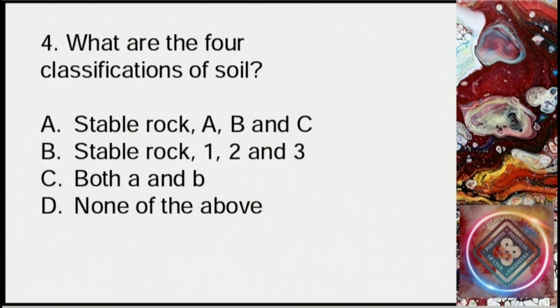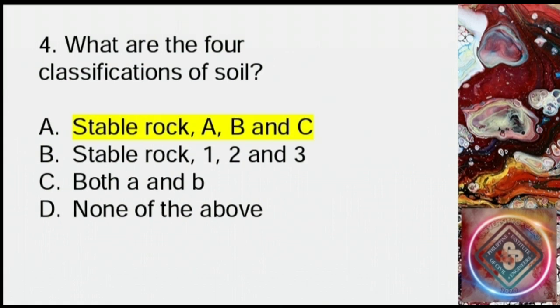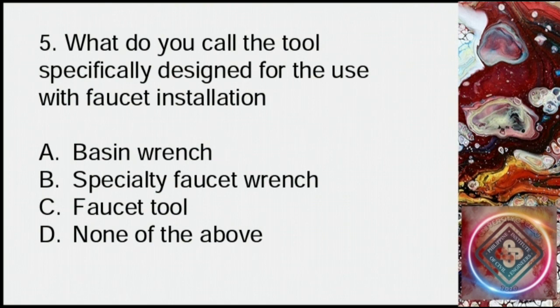Question 4: What are the four classifications of soil? A: Stable rock, A, B and C, B: Stable rock, 1, 2 and 3, C: Both A and B, D: None of the above. Answer: A, stable rock, A, B and C.